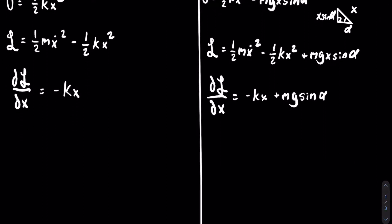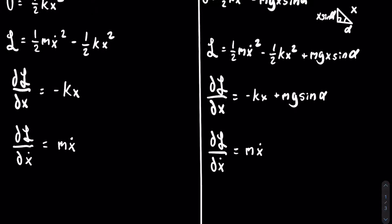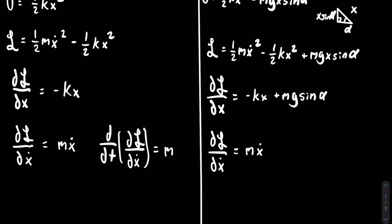For the other side of the equation we need to take the partial of the Lagrangian with respect to x-dot. From the power rule this equals m x-dot, and the same holds true for the other mass-spring system. Now we can find the derivative with respect to time of the partial of the Lagrangian with respect to x-dot, and that is going to equal m x-double-dot for both mass-spring systems.